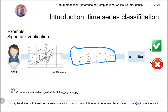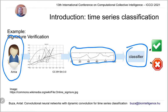Once such a time series is given, a so-called classifier is expected to decide whether this time series was indeed generated by Anna or perhaps by someone else. In this case, Anna wrote her signature herself on the touch screen, so the classifier would say that this signature is indeed written by Anna, and we would grant access to the system for this user.